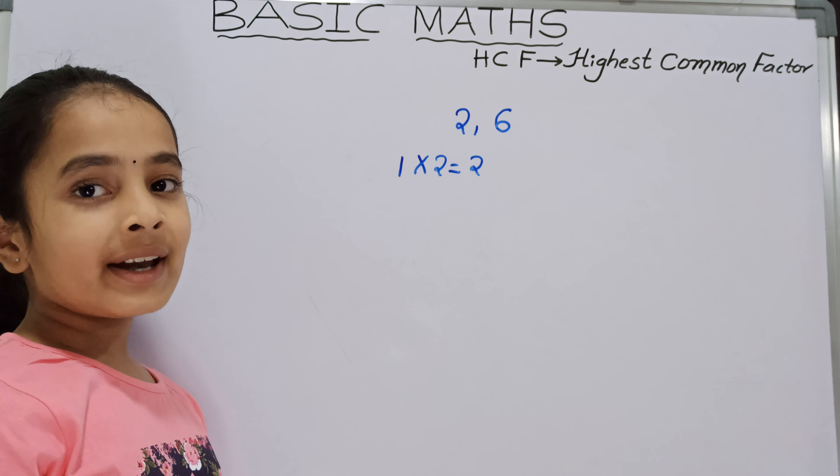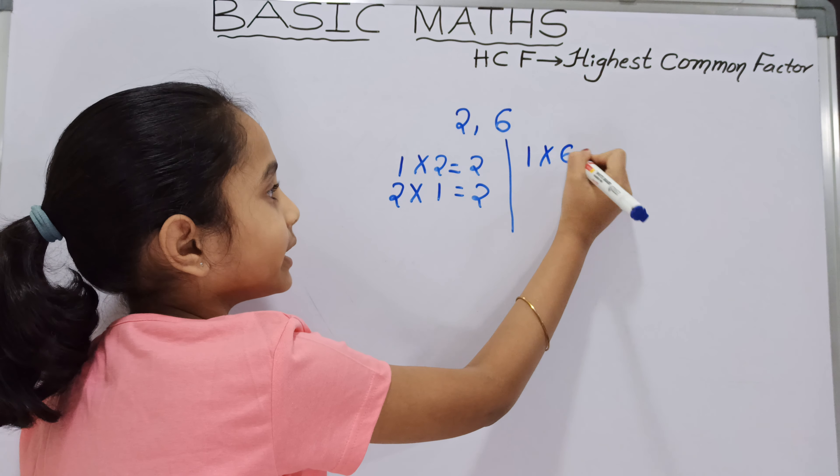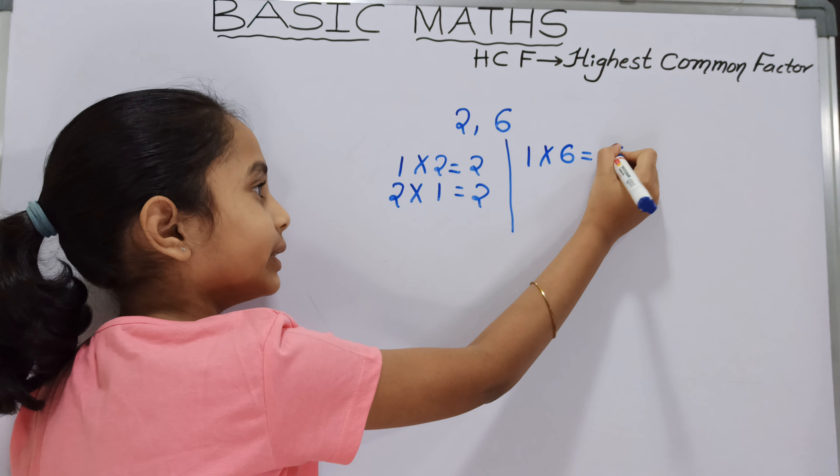Like this, we should write the factors of 6. For that, we should write 1 times 6 equals 6. What is the next number having the product as 6? 2 times 3 equals 6.